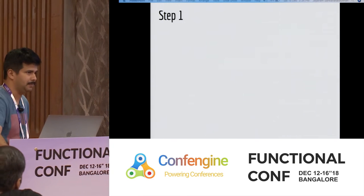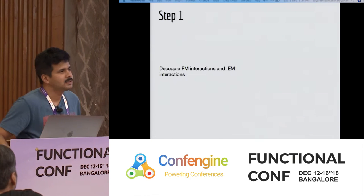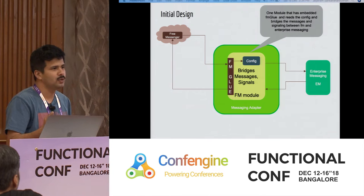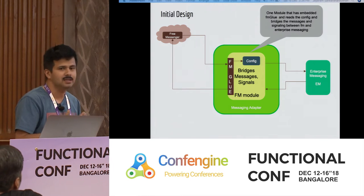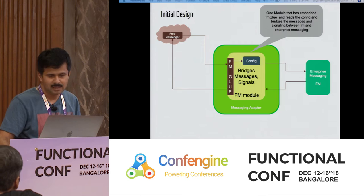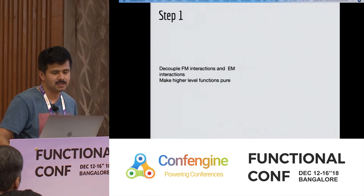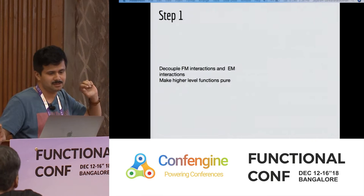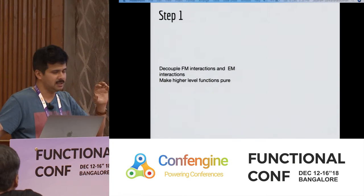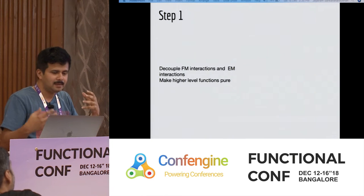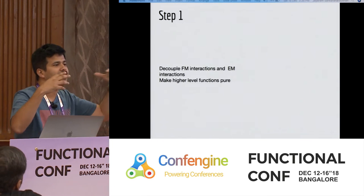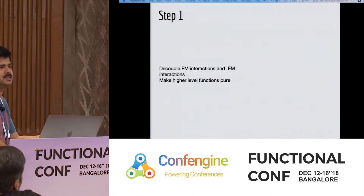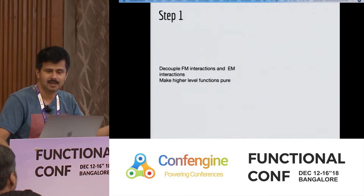So what did we do as the very first step? It's pretty straightforward: the module was doing too many things. So we decoupled the interactions that had to do with the free messenger service versus the interactions with the enterprise messaging service. At a higher level, you identify higher-level capabilities and make them more modular. This is not really an FP principle — it's a general practice.